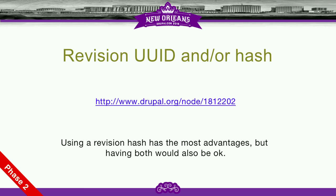Regarding hashing: we are hashing the entity — not the final rendered entity. We exclude a number of fields such as timestamps, because if you make a change on different sites they'll have different timestamps. Practically, we run the entity through the serializer to a JSON string, and that's what we hash.